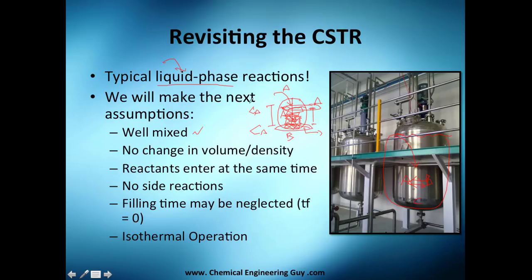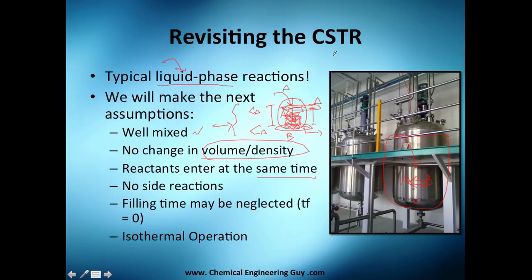This perfect mixing assumption is not strictly true, but we always analyze the ideal case first and then make corrections. If you're interested in non-ideal cases, refer to chapters 12 or 13. We also assume no change in volume or density, and that all reactants enter simultaneously — not first A and then B — as is typical in a continuous process.